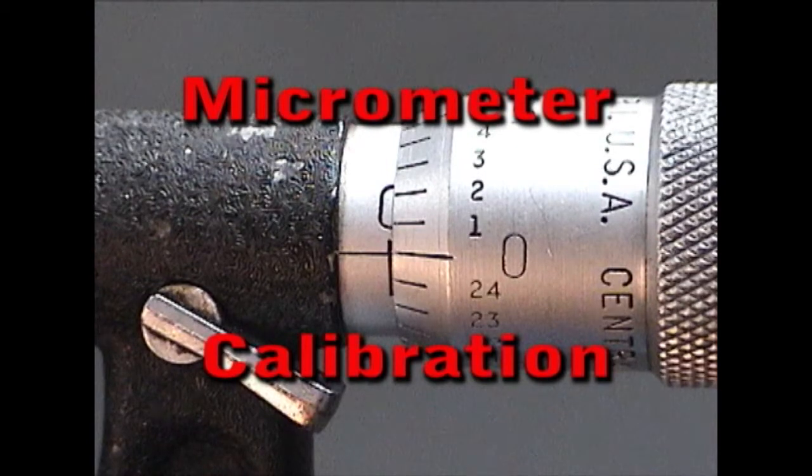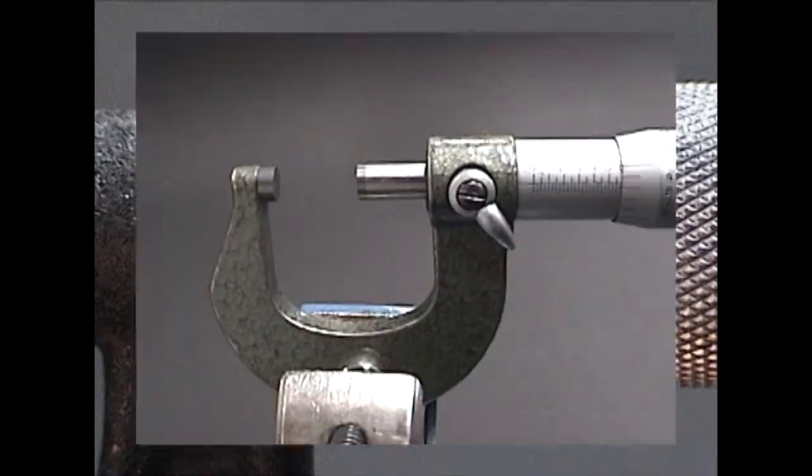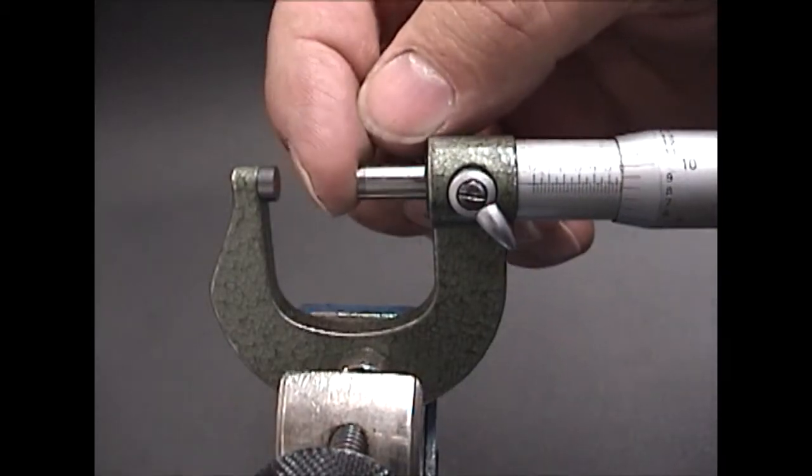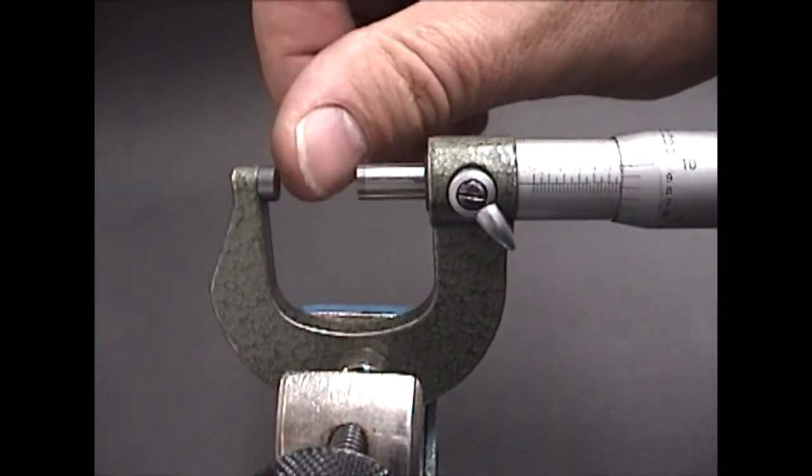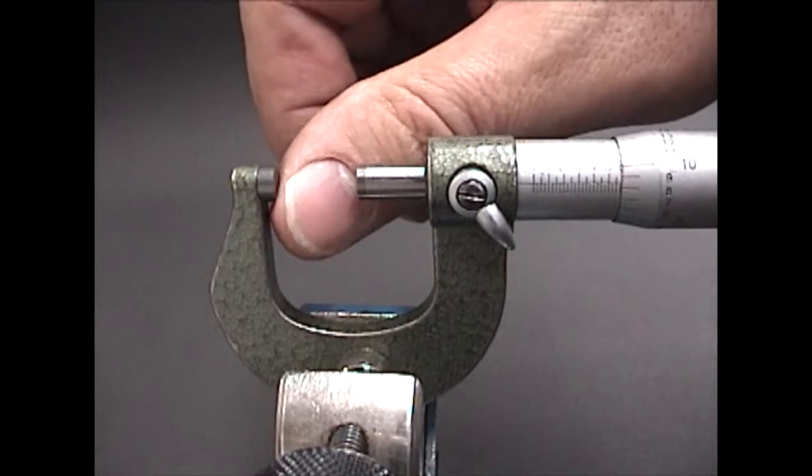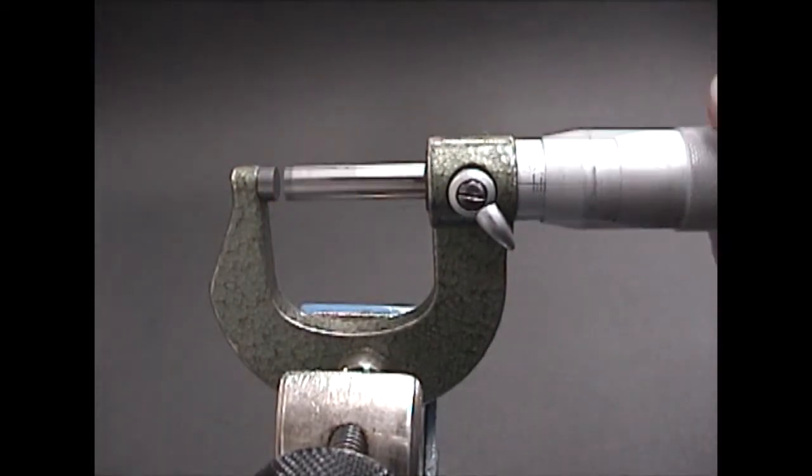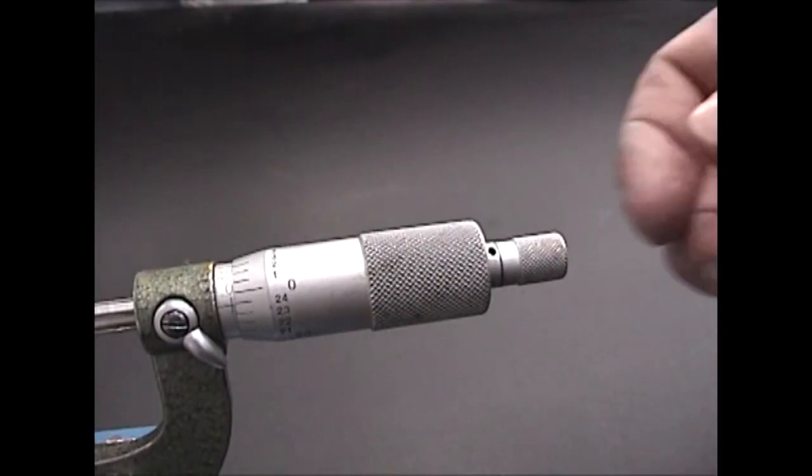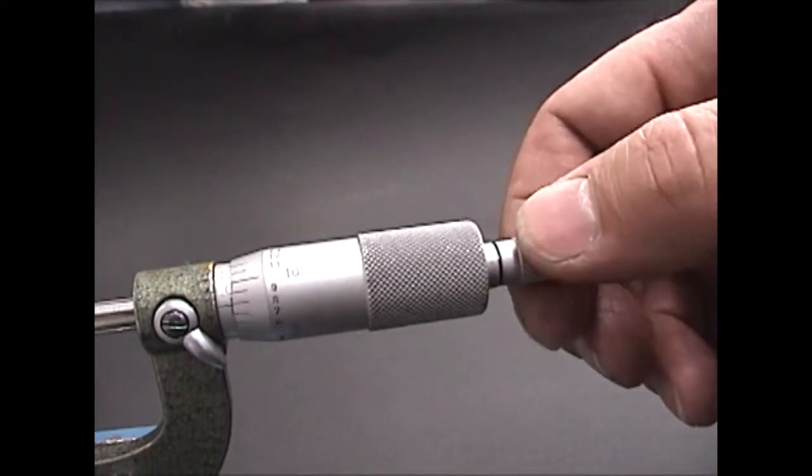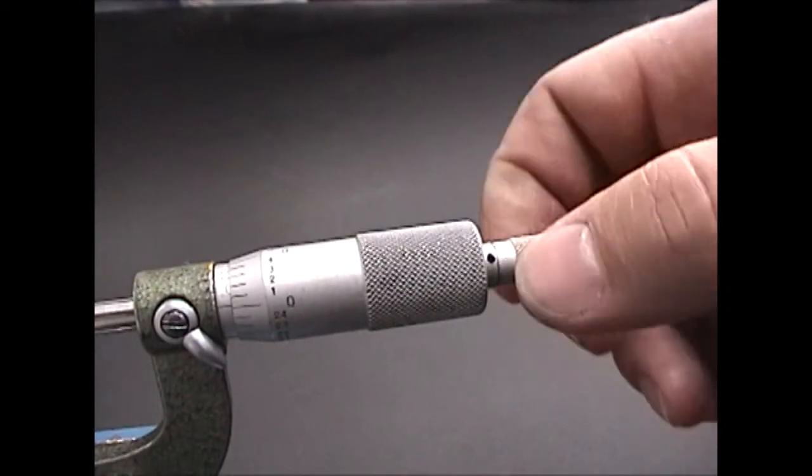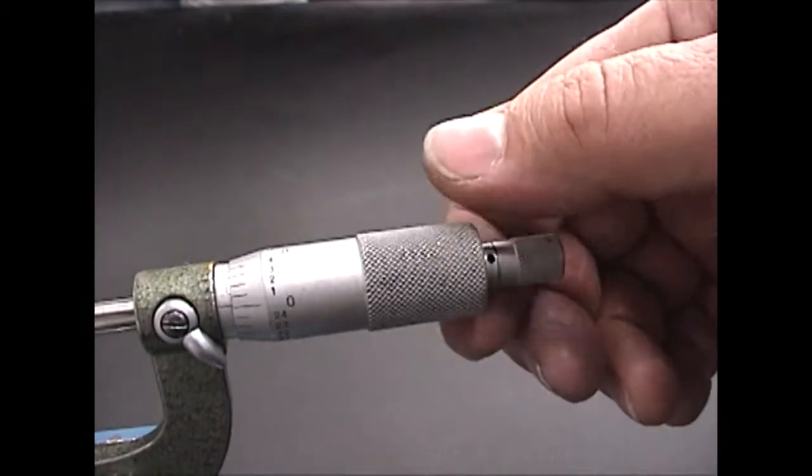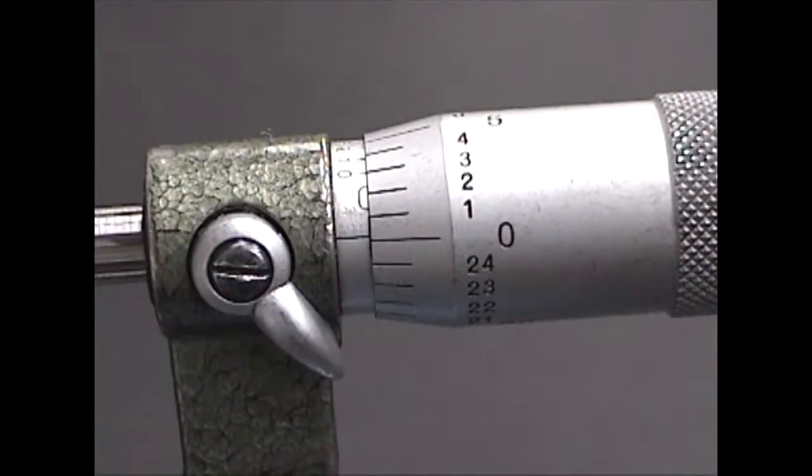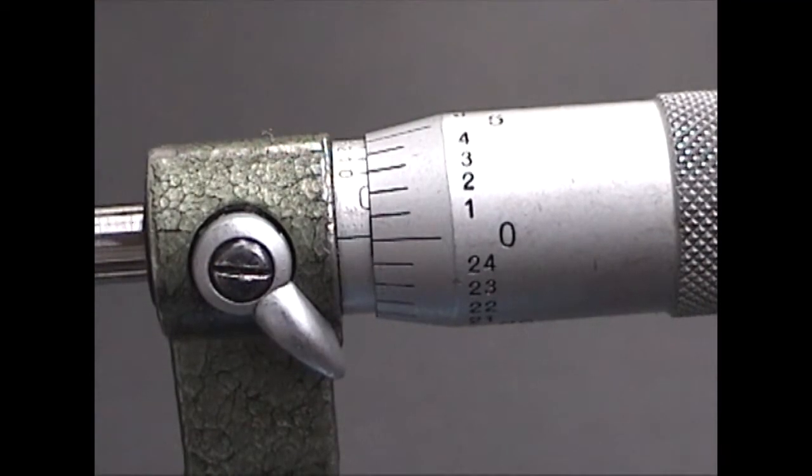Micrometer Calibration. Wipe all dirt from the measuring surface. Use a gentle spinning touch or use the thimble ratchet to close the micrometer. Check to see if the micrometer is zeroed properly.